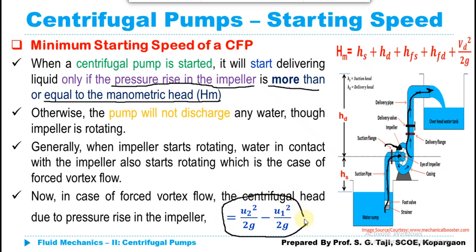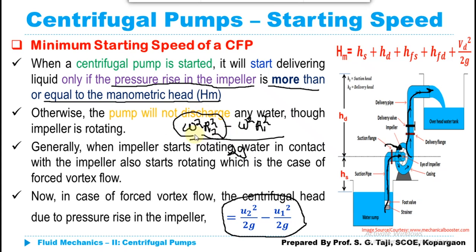You can refer to this expression from any reference book. The centrifugal head is given by: (ω²r₂² − ω²r₁²) / (2g). Replacing ω²r₂² with u₂² and ω²r₁² with u₁², where u₁ and u₂ are the tangential velocities at the inlet and outlet, the centrifugal head from forced vortex flow becomes: u₂²/(2g) − u₁²/(2g).